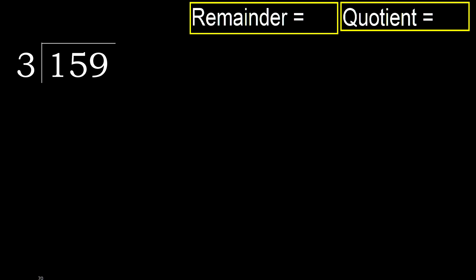159 divided by 3. 1 is less, therefore take the next digit — 15 is not less, therefore work with 15.